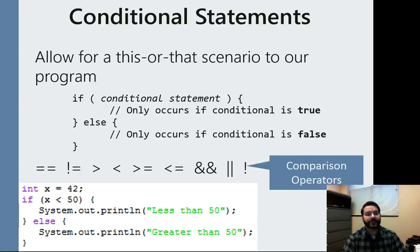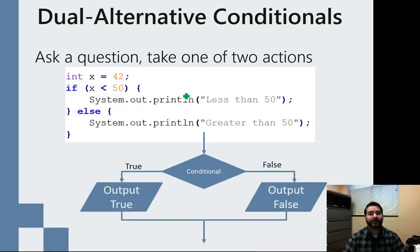So we were just talking about conditional statements, but we actually have a few different kinds of conditional statements. The one we were just looking at is something known as the dual alternative conditional. And it's exactly what it sounds like. I have two different options: what will happen if there is a true conditional, and what will happen if there is a false conditional. You can think about this just like two diverging paths.